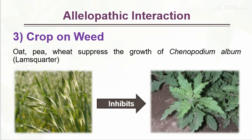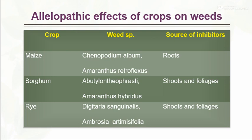The next interaction is crop on weed. Oat and pea suppress the growth of Chenopodium album. Allelopathic effect of crop on weeds: Maize crop inhibits weed species Chenopodium album and Amaranthus retroflexus, with the source of inhibition being the roots. Then sorghum and rye also show crop-on-weed allelopathic effects.